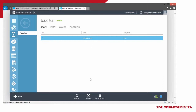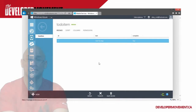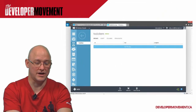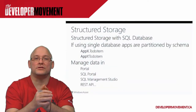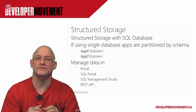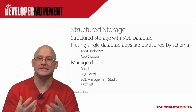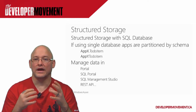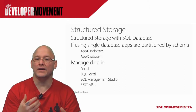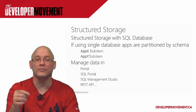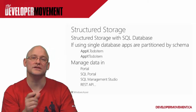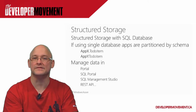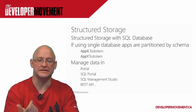This is absolutely fantastic — so much easier than it used to be. The storage in Azure Mobile Services is structured storage: it's SQL database storage. If you're using a single database, it will set up separate schemas. Even if you have the exact same objects in two different applications, you will see them as different schemas. For example, appx.todoItem and appy.todoItem are separated out. You can manage your data both in the portal and in SQL Management Studio, or directly through the REST API.